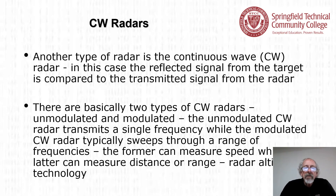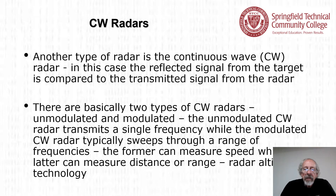Another type of radar is the continuous wave or CW radar. The reflected signal from the target is compared to the transmitted signal. There are two basic types: unmodulated and modulated. The unmodulated CW radar transmits a single frequency and can measure speed, while the modulated CW radar sweeps through a range of frequencies and can measure distance or range — which is the basis of radar altimeter technology.